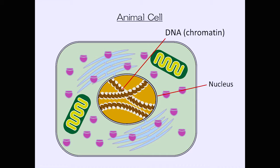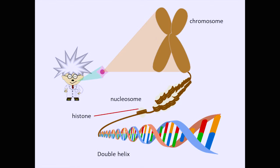I'd like to show you some overview. This is actually an animal cell. We have approximately 37 to 40 trillion cells in the body, and in each cell we have the nucleus, which holds all the genetic information. And from the skin cells,